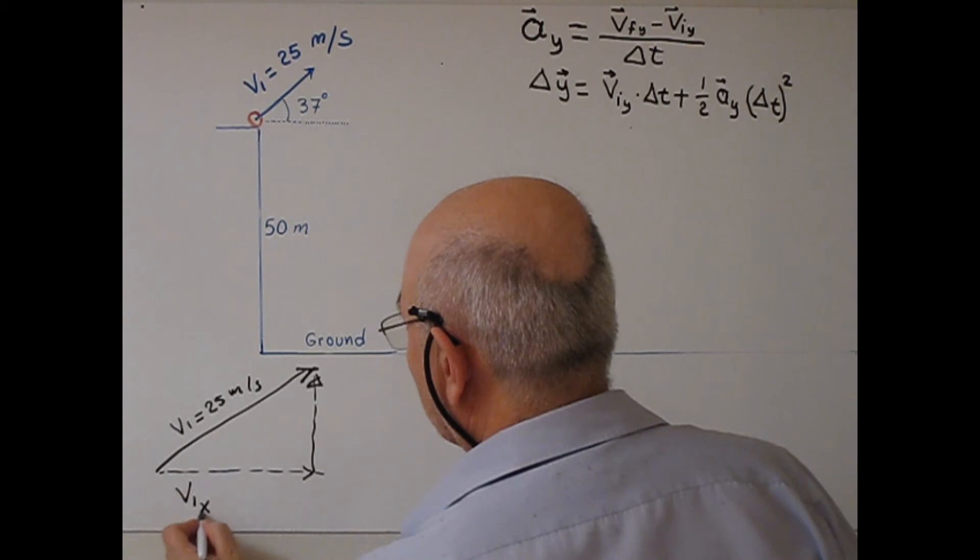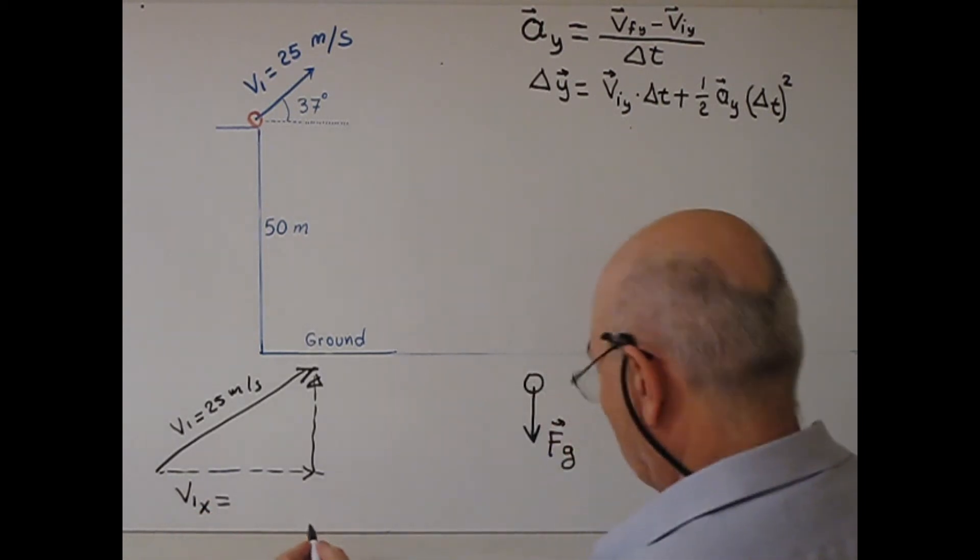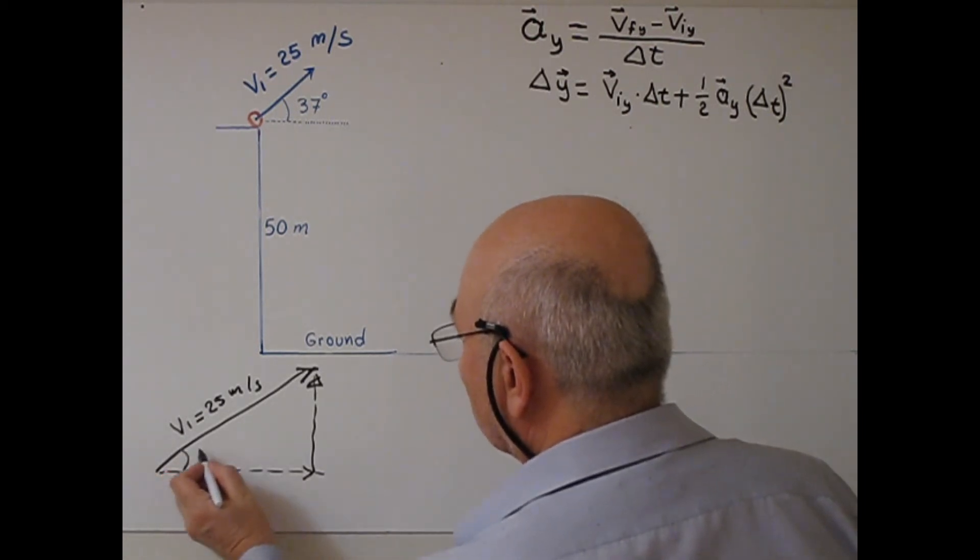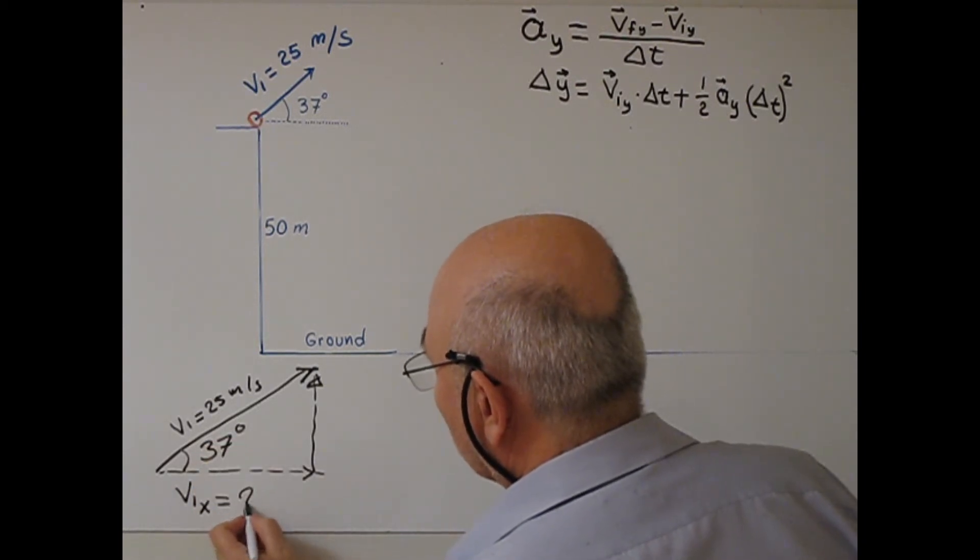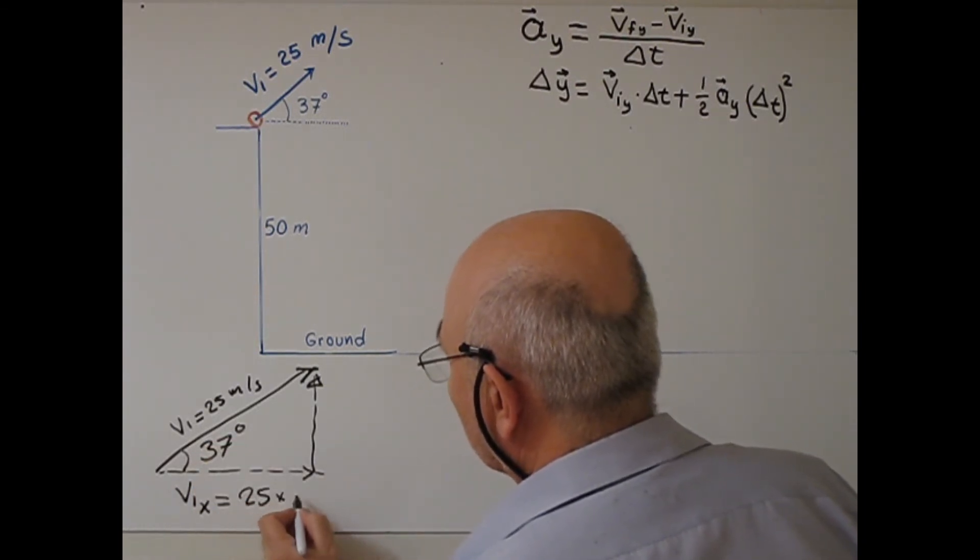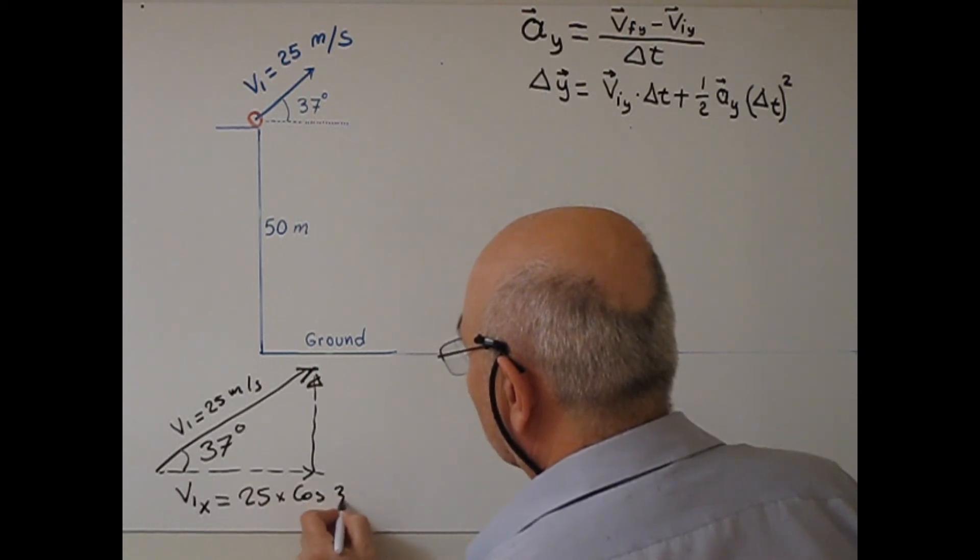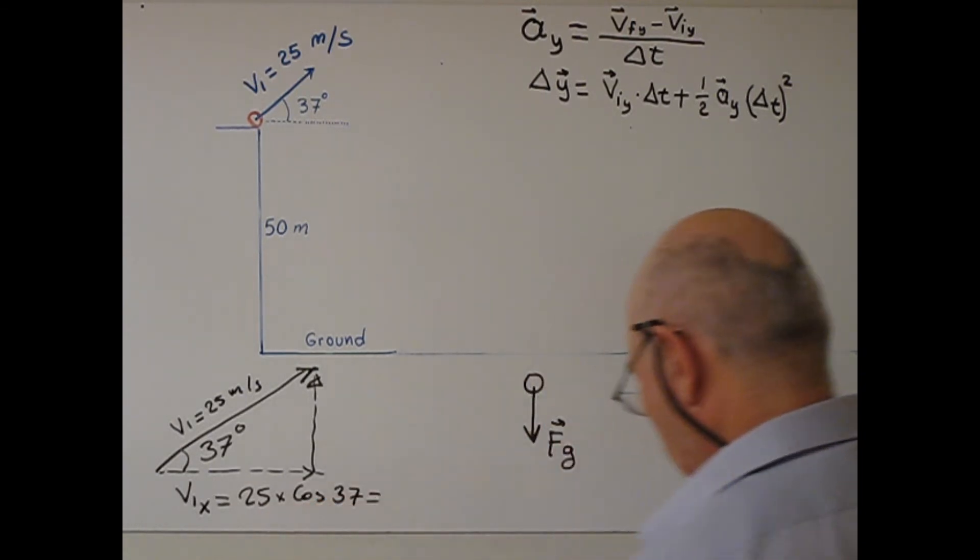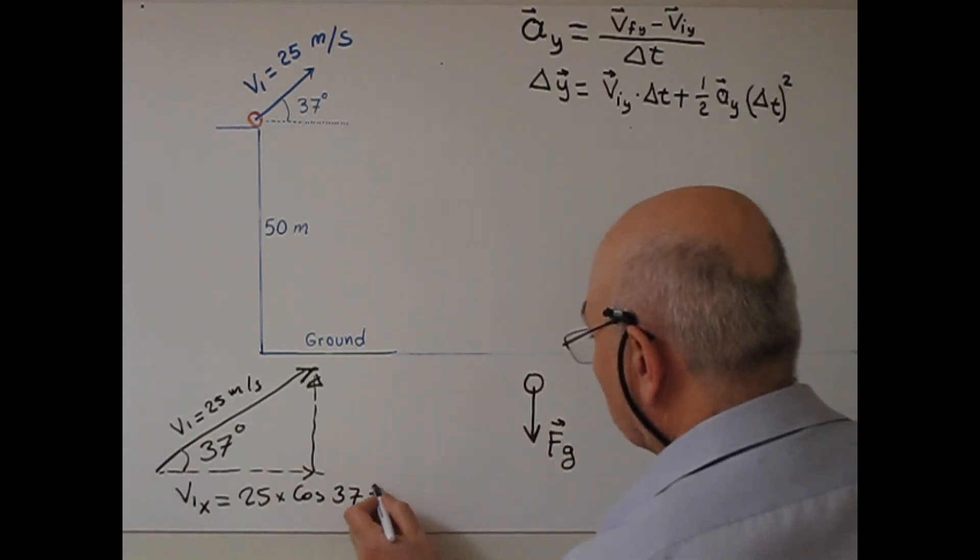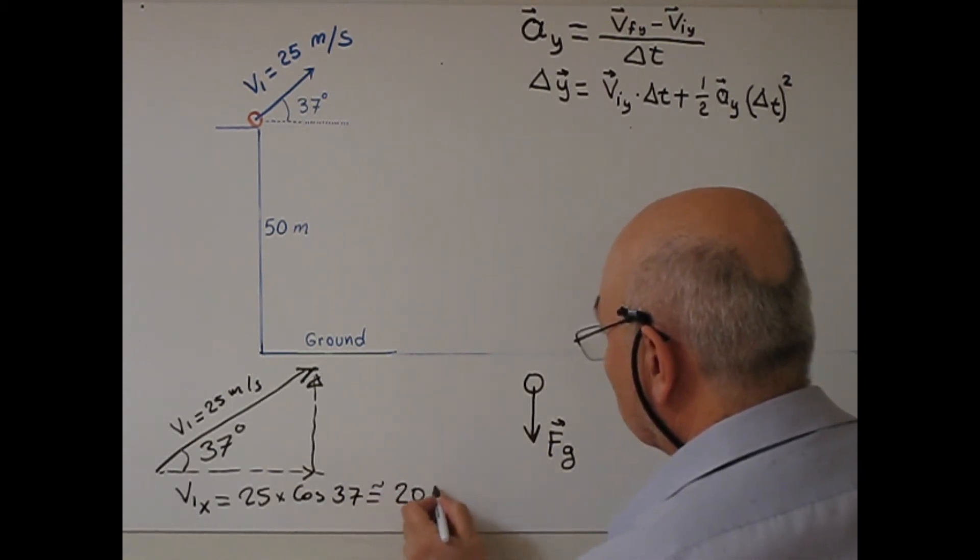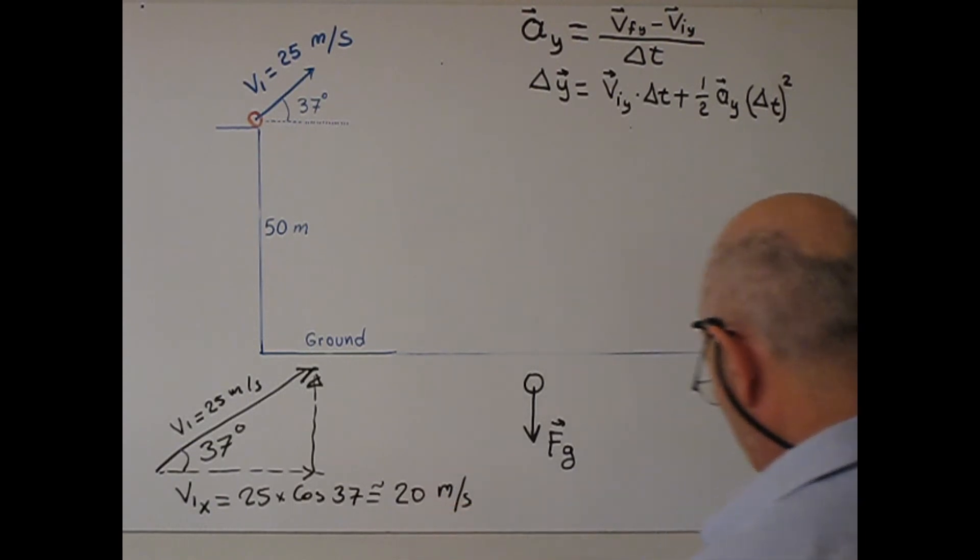V1x will be, okay, so this is 37 degree. Okay, 25 times cosine 37. So, this will equal around 20 meter second.